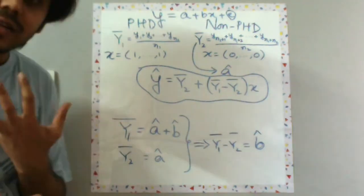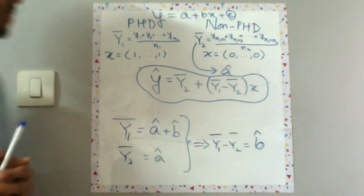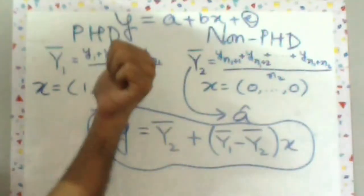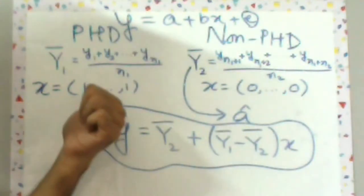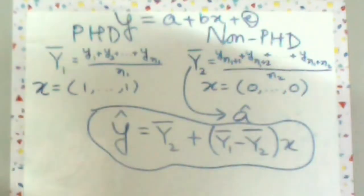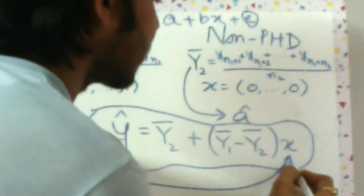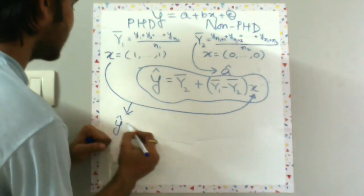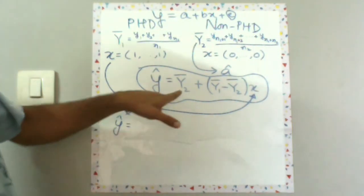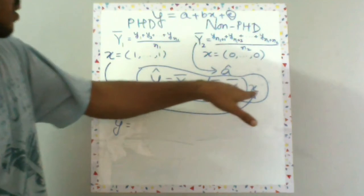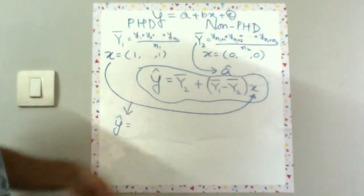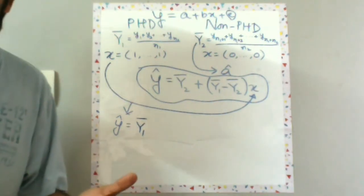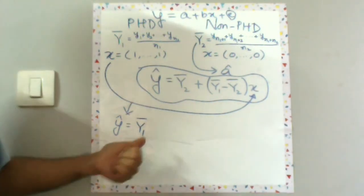Let's just zoom in into this equation further. PhD graduates have been labeled as one. Let's put in one here. What will we get? Y hat for PhD graduates would be this plus this, because this is one, so Y2 bar will be cancelled. It will be simply Y1 bar.